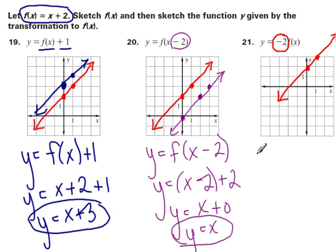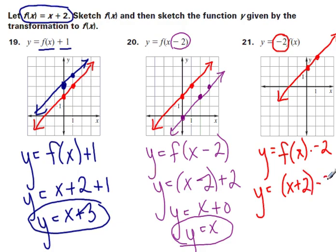So if I do that algebraically, y equals f of x times a negative 2, then my y is equal to x plus 2 times a negative 2. And then when I distribute to get rid of the parentheses, y is equal to negative 2x minus 4.